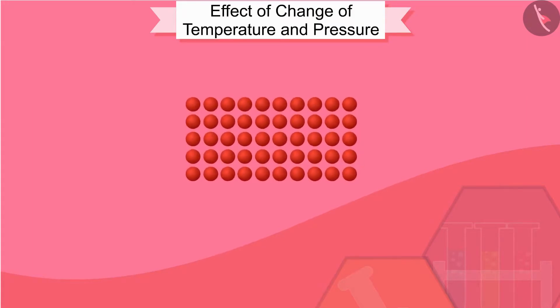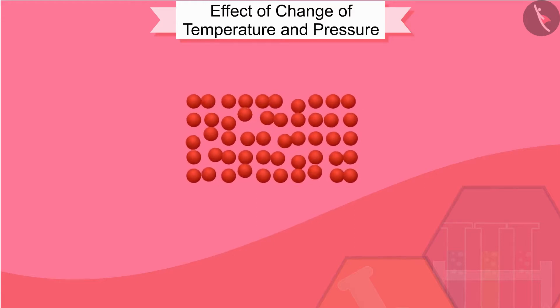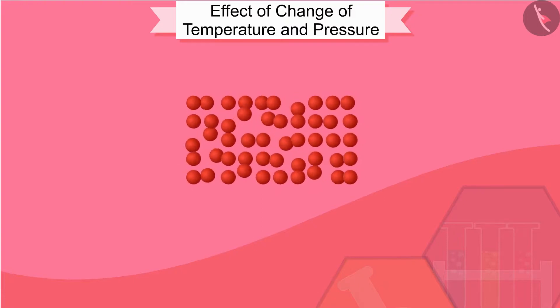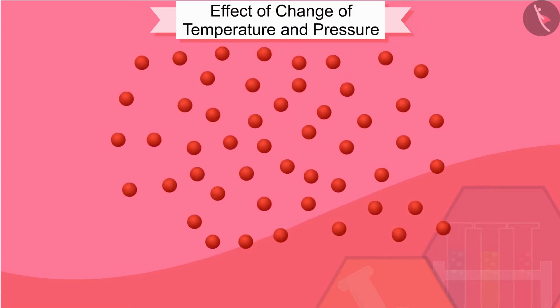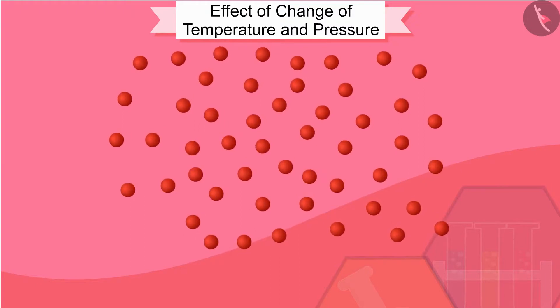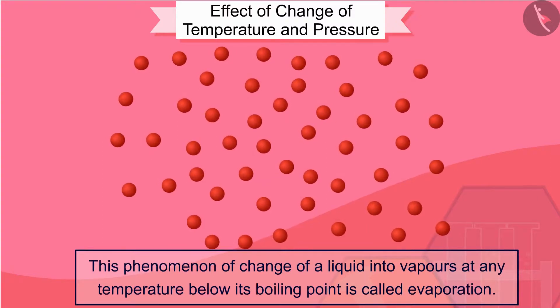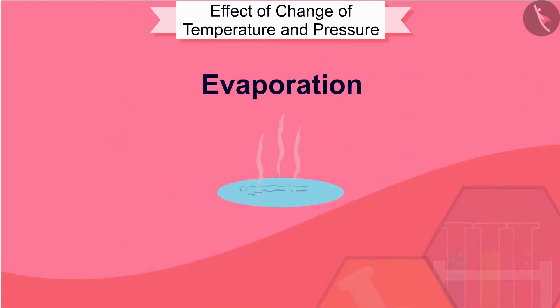We know that particles of matter are always moving and are never at rest. At a given temperature, in any gas, liquid, or solid, there are particles with different amounts of kinetic energy. In the case of liquids, a small fraction of particles at the surface, having higher kinetic energy, are able to break away from the forces of attraction of other particles and get converted into vapor. This phenomenon of change of a liquid into vapors at any temperature below its boiling point is called evaporation.